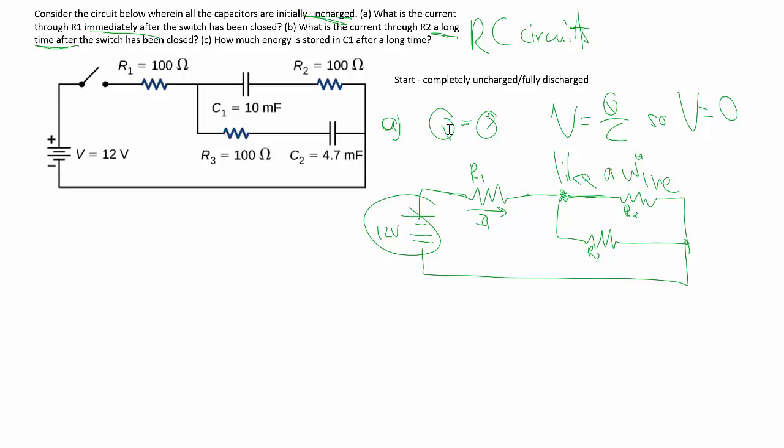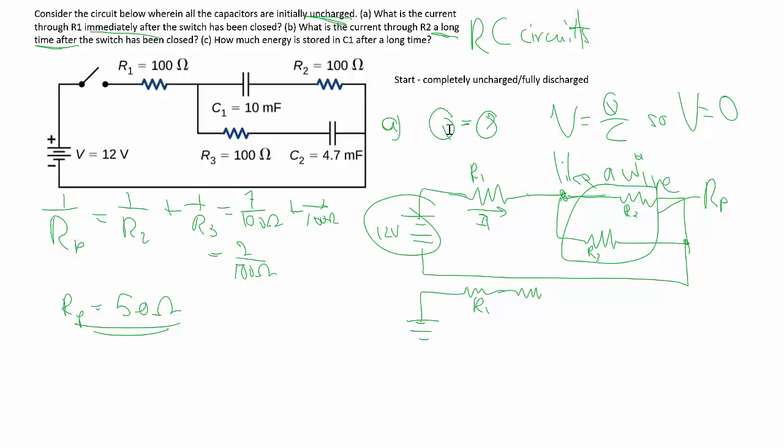So we have this bit which becomes parallel resistance. So RP, 1 over is equal to 1 over R2 plus 1 over R3, and that's 1 over 100 ohms plus 1 over 100 ohms. So then RP is going to be 50 ohms, taking that reciprocal. Then the R total, which is series with R1 and your RP, so you just simply add them up. So 100 plus 50 is 150.